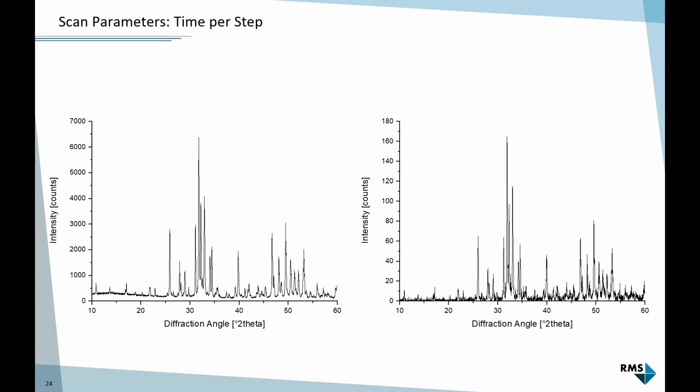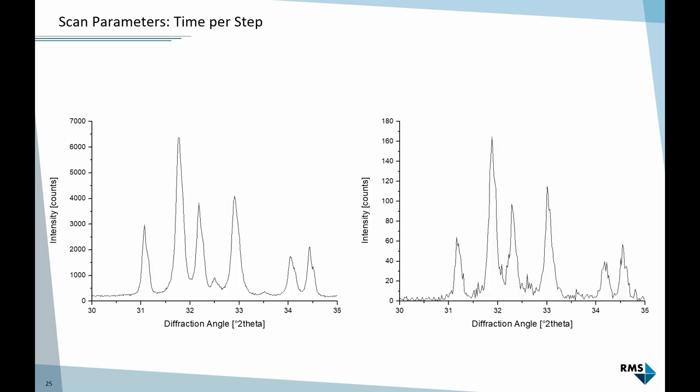The third parameter is time per step. It's difficult to make a general statement because the two diffraction patterns here were measured on different instruments but both in 12.5 minutes. On one we get 7,000 counts, on the other 180 counts. The difference is the left was measured on a linear detector, a rather modern detector, and the right on an old point detector that's less effective and takes much longer to reach the same intensity. I can't really tell you how long to measure per data point without knowing what instrument you use, but I can give you some personal experience.